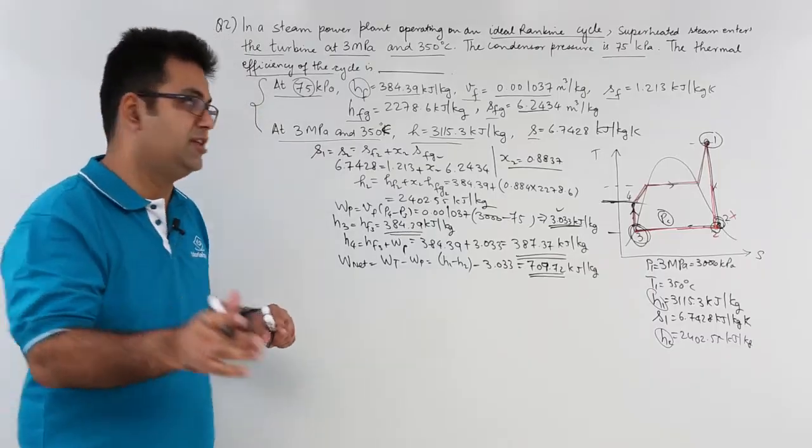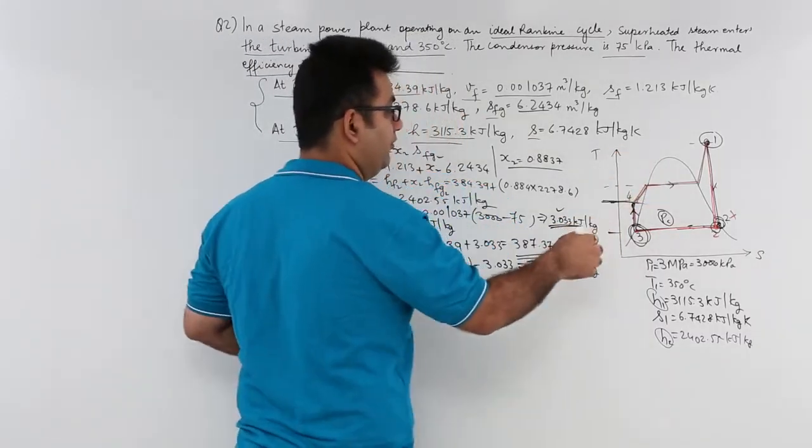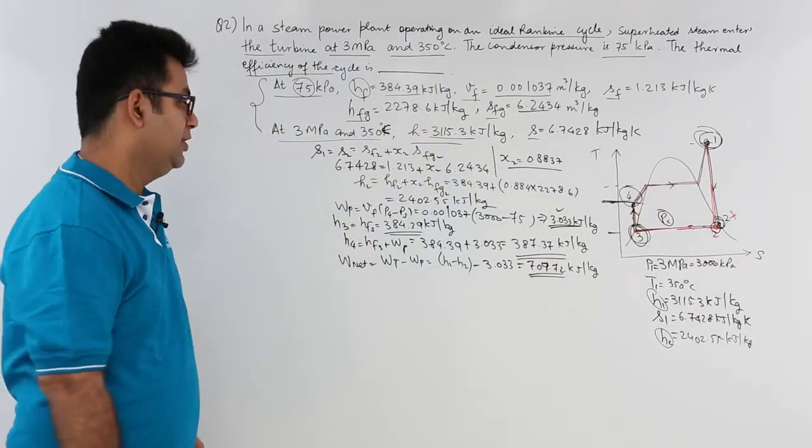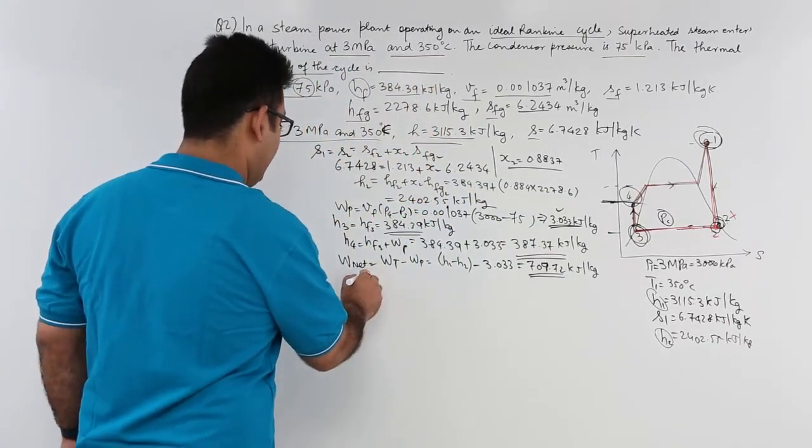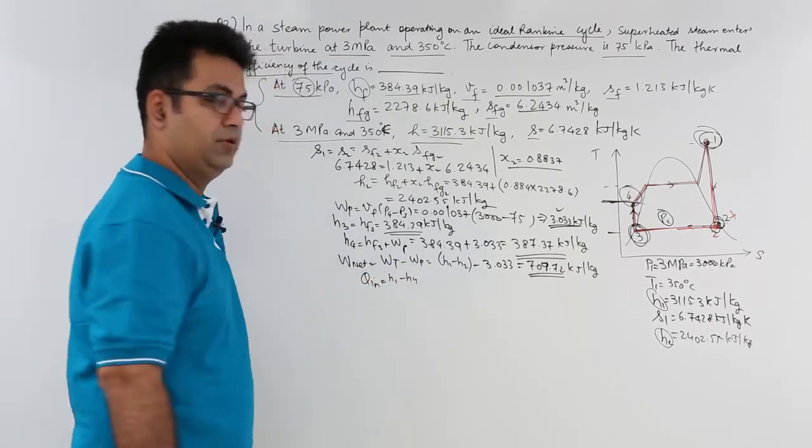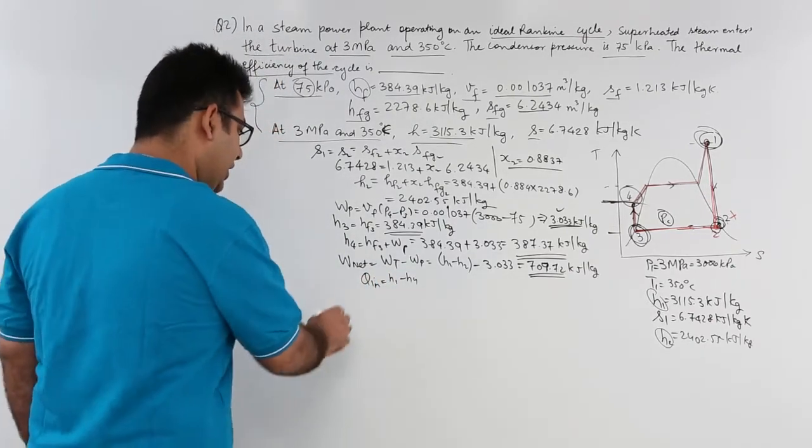Now, to find out the thermal efficiency, I need the heat input which is from this point to this point. So, let us find out the heat input which is H1 minus H4. After finding out heat input, the thermal efficiency would be net work output upon heat input.